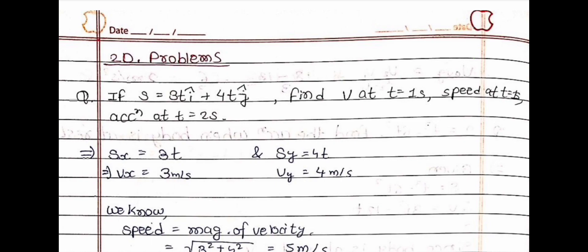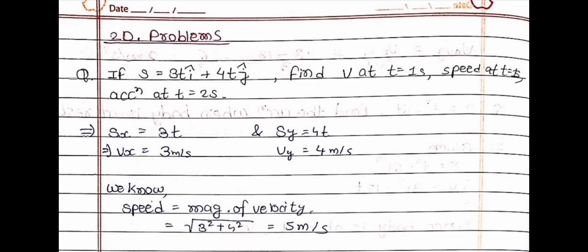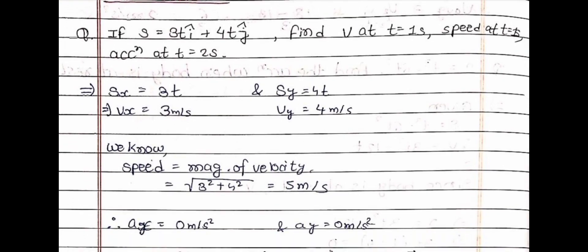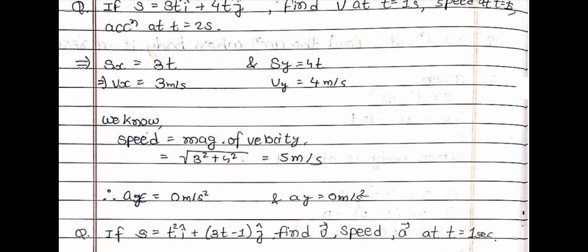The first question is: if s = 3t î + 4t ĵ, find velocity at t = 1 second, speed at t = 1 second, and acceleration at t = 2 second. You must try to solve on your own; otherwise the answer is here — you can take a screenshot.